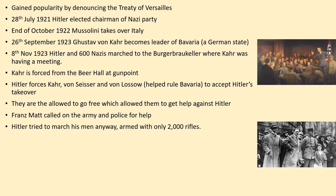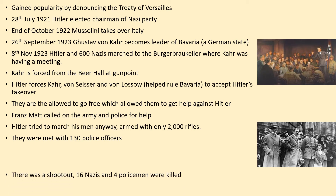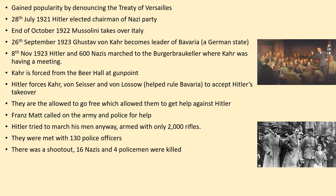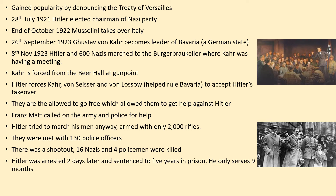Hitler tried to march his men anyway to take over the rest of Weimar, but they were armed with only 2,000 rifles. They were met with 130 police officers, and there was a big shootout between the two sides — the police and army protecting Weimar against Hitler's forces. Sixteen Nazis and four policemen were killed. Hitler was shot in the shoulder, arrested two days later, and sentenced to five years in prison, though he only served nine months.